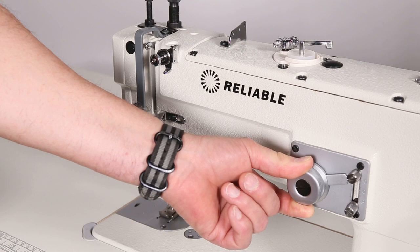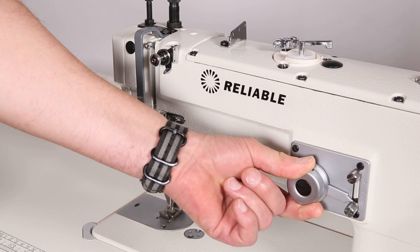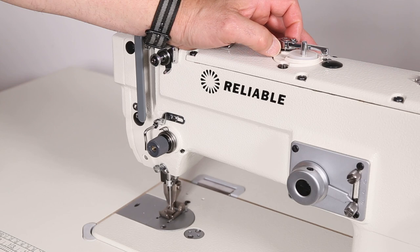This lever is for your zigzag adjustment. You can take it all the way up to the top and just have straight stitch or whatever required zigzag width you want, just keep pushing it down to its maximum length.